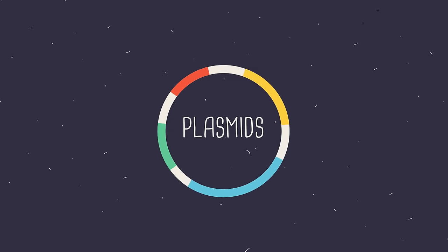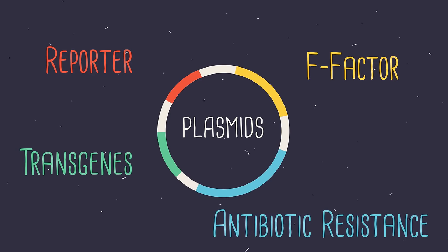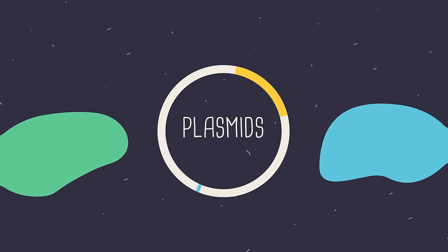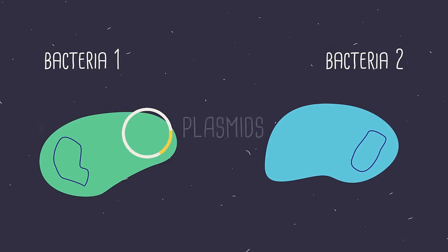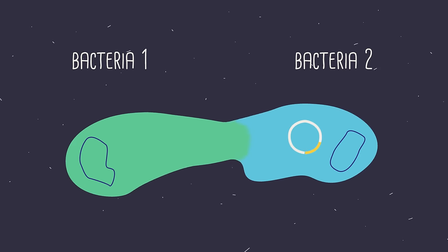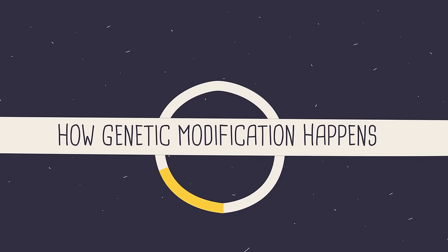In GMOs, it's all about the plasmids. They are really useful tiny bits of DNA that can contain one or several genes. The cool thing about plasmids is that they can be passed between bacteria as easily as shaking hands. So plasmids are a super important part of how genetic modification happens.